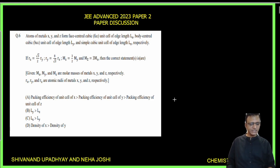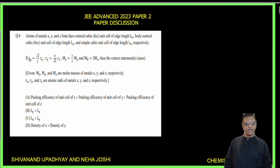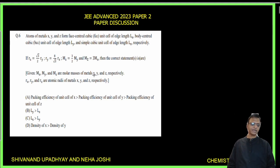Question number 6 is from solid state. Atoms of metal X, Y, and Z form FCC unit cell of edge length LX, body-centered cubic (BCC) unit cell of edge length LY, and simple cubic unit cell of edge length LZ respectively. RZ is under root 3 by 2 times of RY; RY is equal to 8 by under root 3 times of RX. MZ is 3 by 2 times of MY and MZ is 3 times of MX. MX, MY, MZ are molar masses and RX, RY, RZ are atomic radii of metals X, Y, Z respectively.